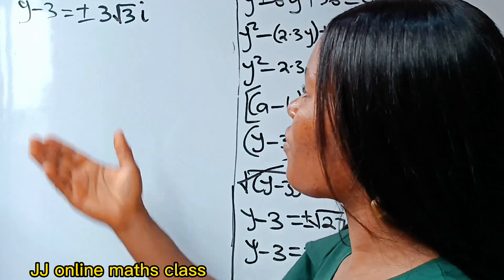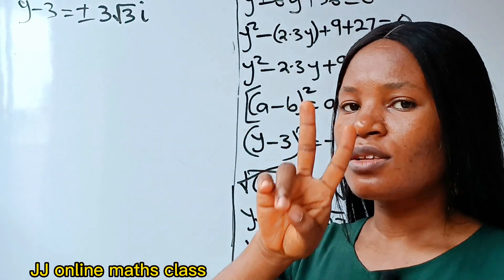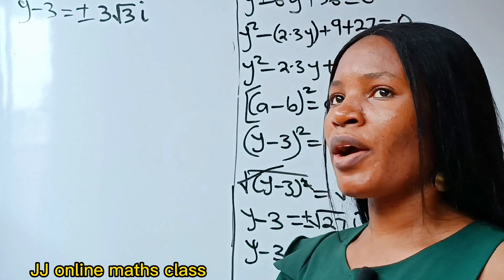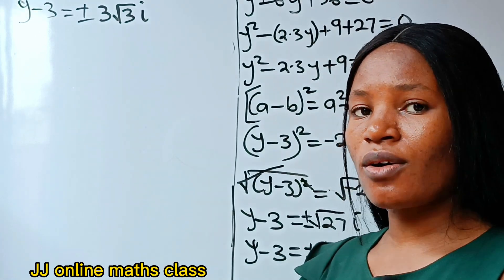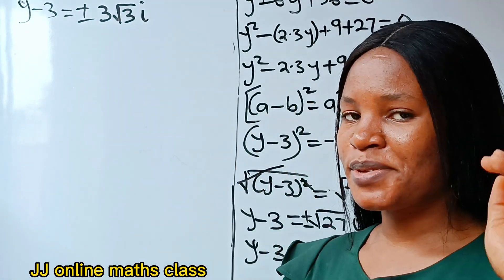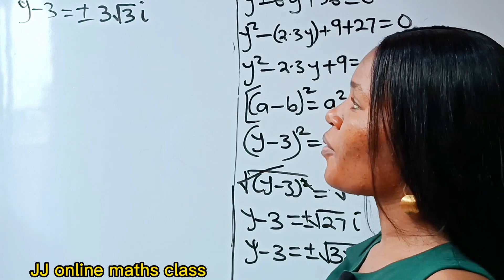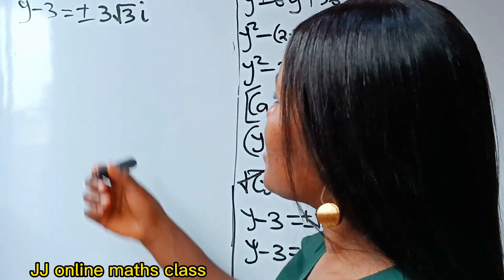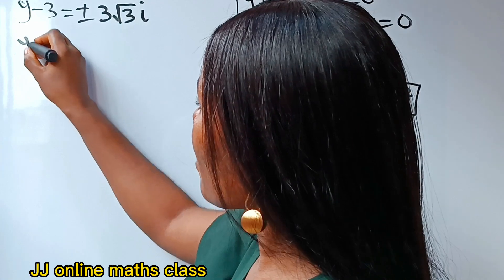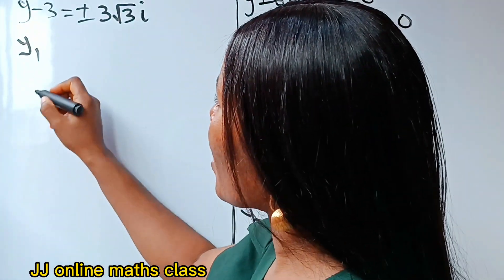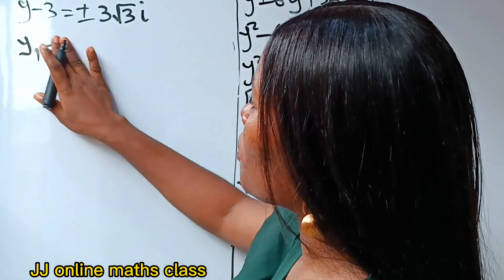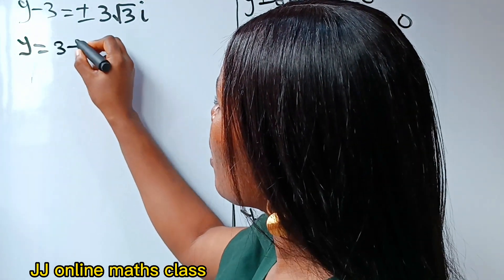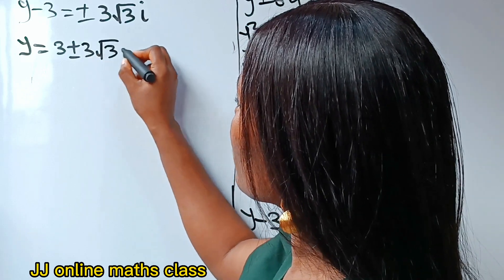We have gotten two values for y. Shifting minus 3 to the other side, we get y equals 3 plus or minus 3 root 3 i. So the first case is y₁ equals 3 plus 3 root 3 i, and the second case is y₂ equals 3 minus 3 root 3 i.